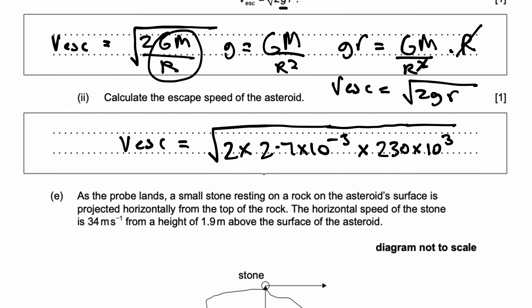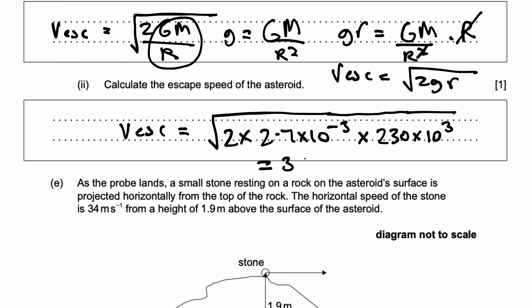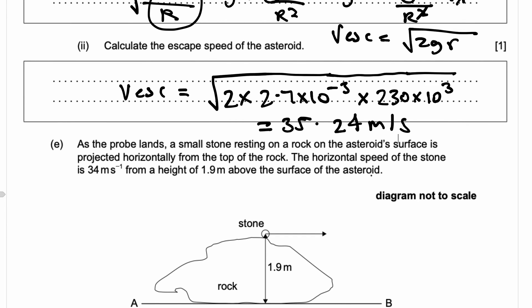If I put this on my calculator, what do I get? Let's see. 2 times 2.7 × 10^-3 times by 230 × 10³. That gives me 35.24 meter per second and that's the escape speed from this asteroid.